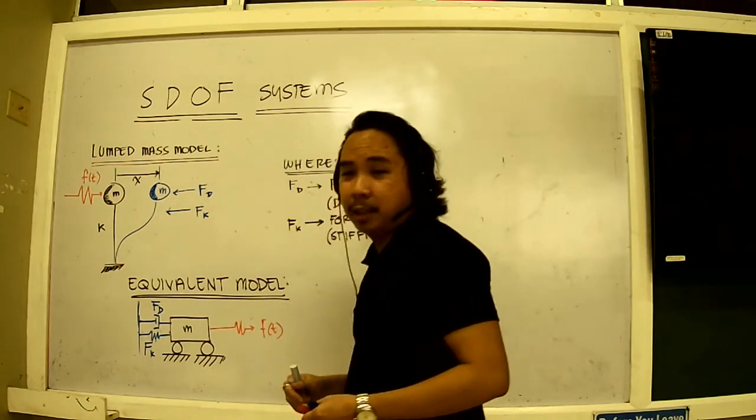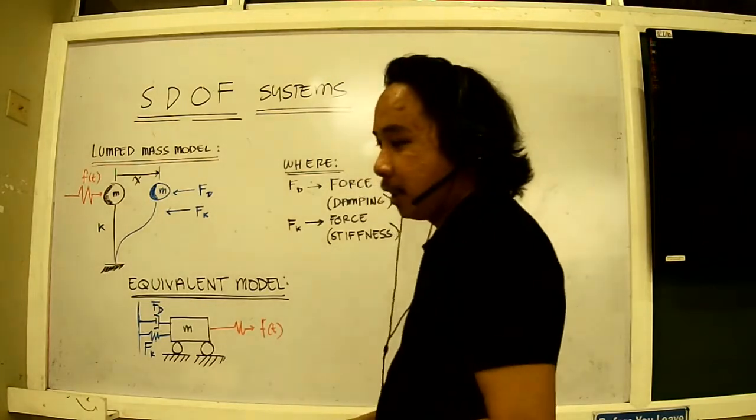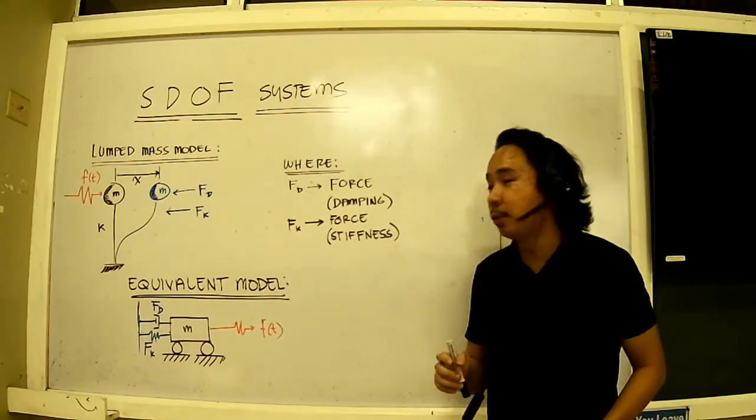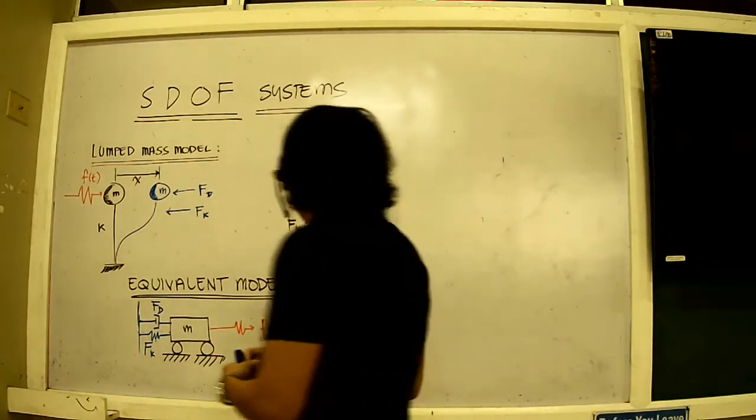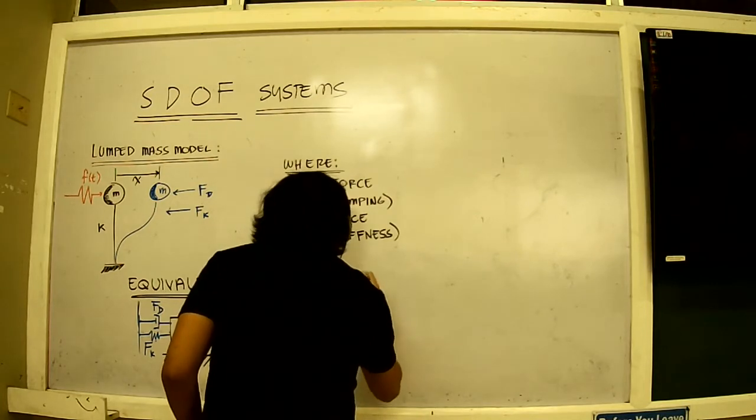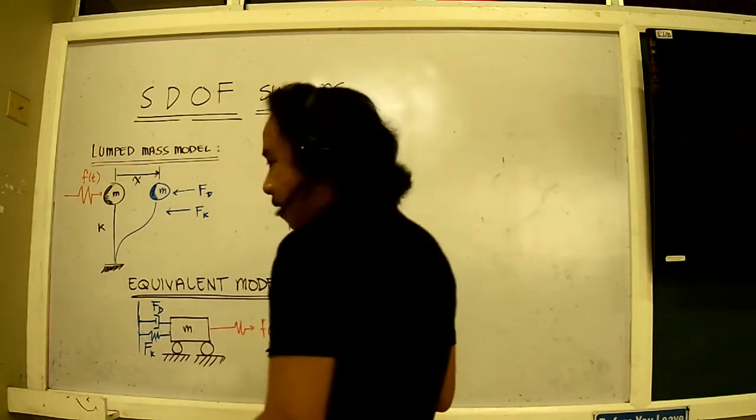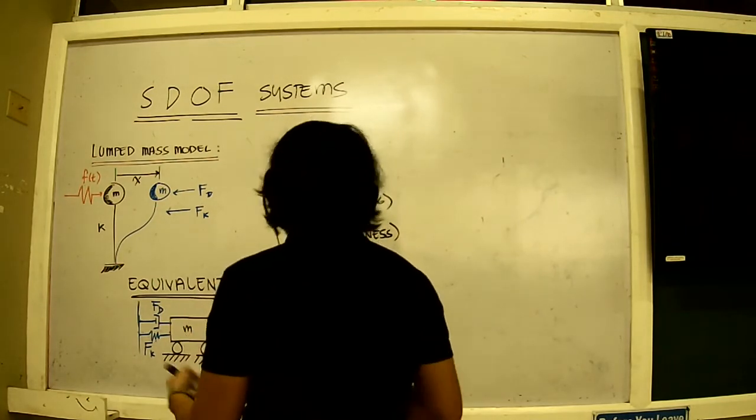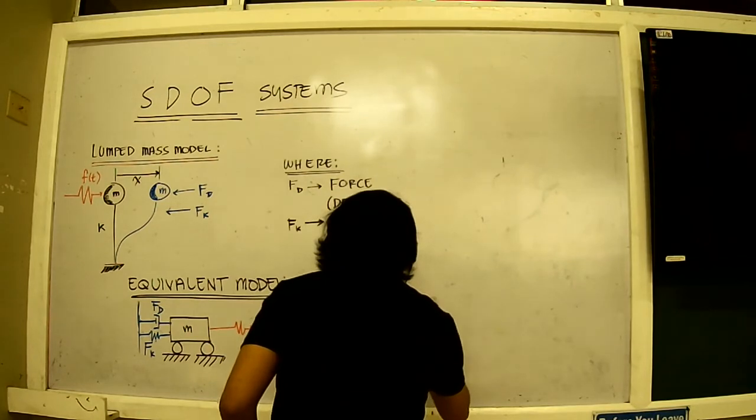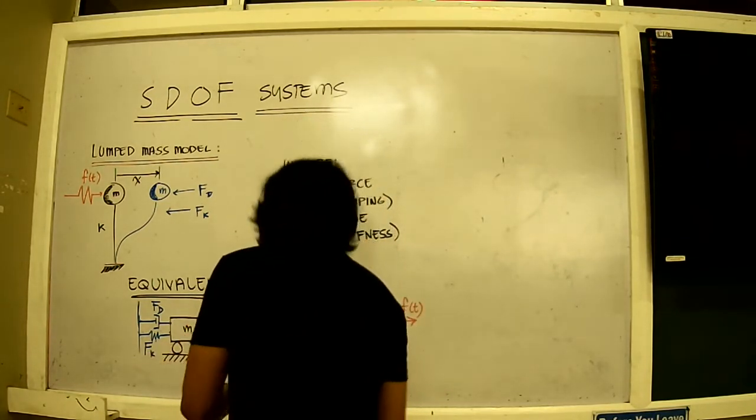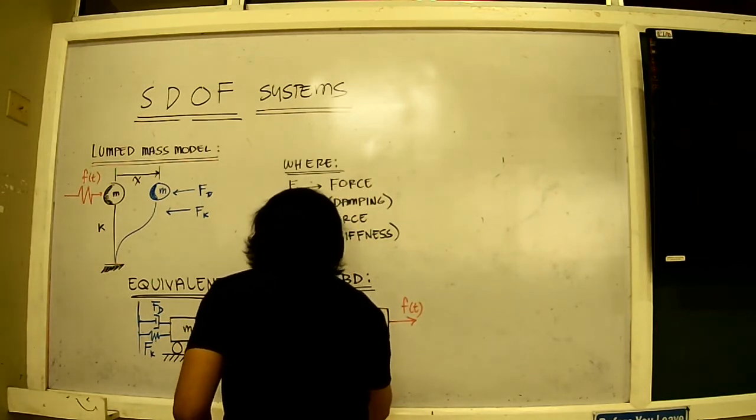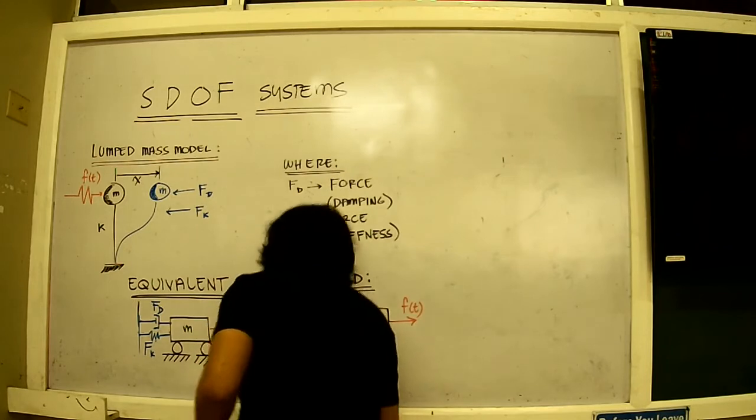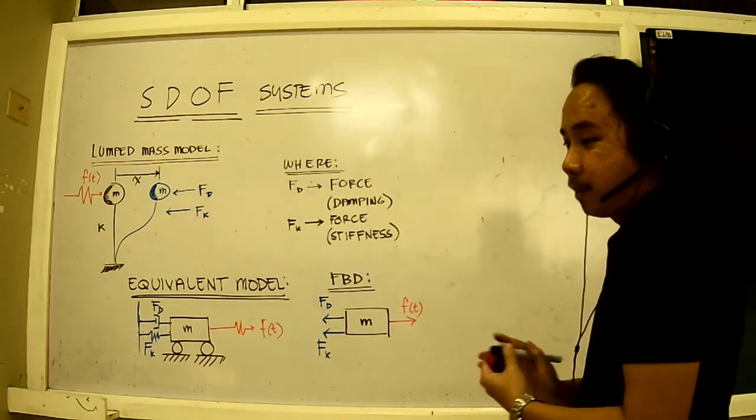From this equivalent model, we try to analyze this in the FBD, free body diagram from our mechanics. Now, free body diagram, FBD. I take this car here and I bring out the forces. So, this is our forcing function, FT. Our FD damping is resisting the movement. Another, FK, is also resisting movement. This is our free body diagram.